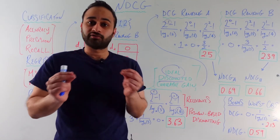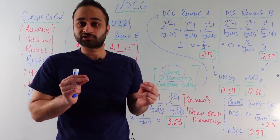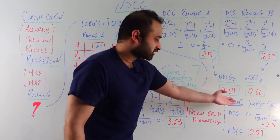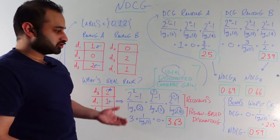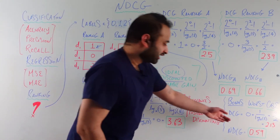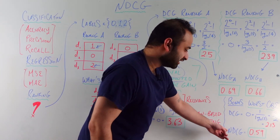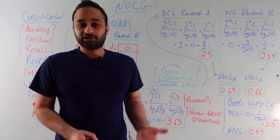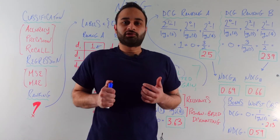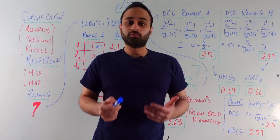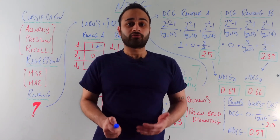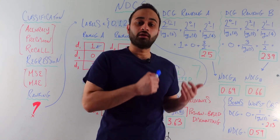So now we have an objective way to compare different rankings. And just for fun, if I ranked in the worst possible case — labels 0, 1, 2 — I would get a DCG of 2.13 and an NDCG of 0.59, which is clearly worse than both A and B. So hopefully you learned about NDCG, Normalized Discounted Cumulative Gain, which is a very powerful and commonly used ranking metric, in the same way that we have classification and regression metrics.